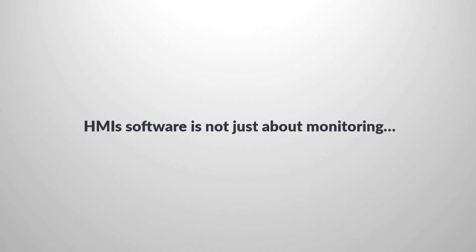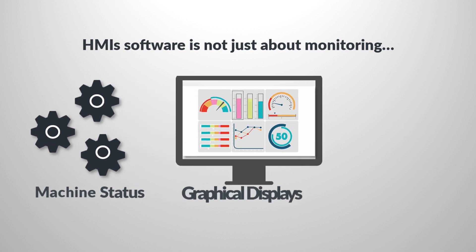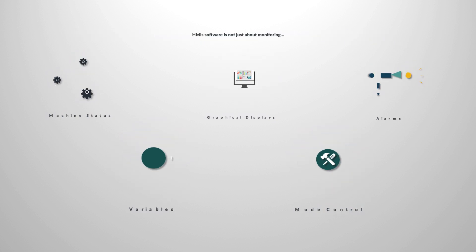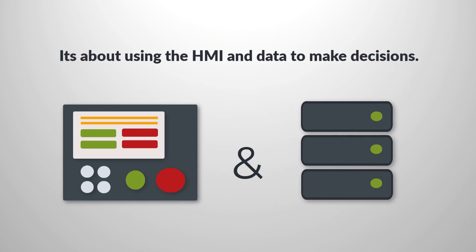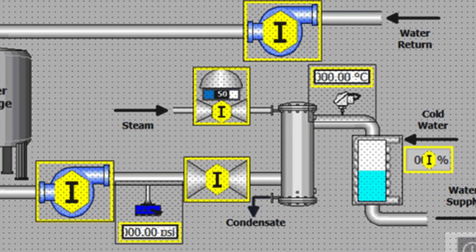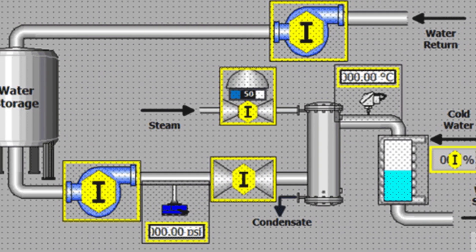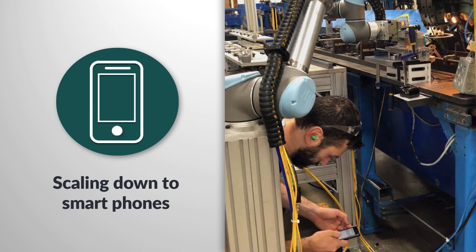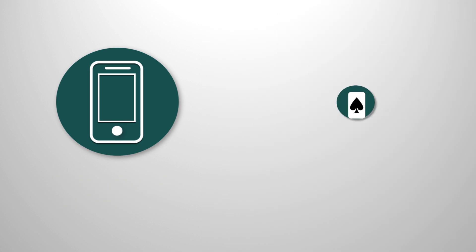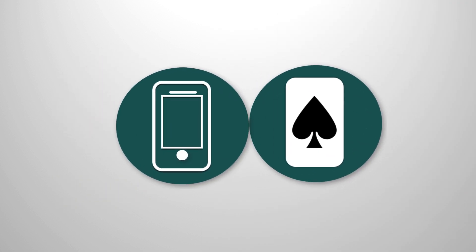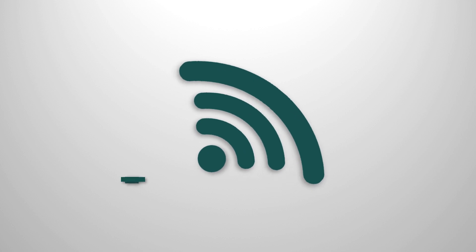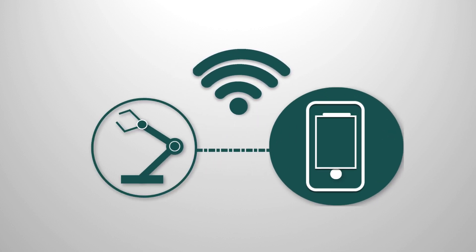The HMI software is not just about monitoring things such as machine status, graphical displays, alarms, variables, and mode control on a machine or system. It's also about using the HMI and the data to make decisions. While the HMI software can scale up to monitor and control large machines and processes, it is also shrinking down to edge devices controlling small machines and process skids. In this case, the HMI software is mated to the machine control software on the same mini PC, no bigger than a deck of cards. While the HMI software is installed, there is no HMI hardware — but the included Wi-Fi connects the controller to the HMI in your pocket: the smartphone.